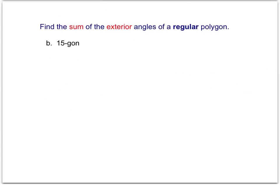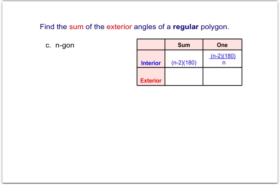So for any problem, no matter the number of sides of our polygon, if we're looking to find the total or the sum of the exterior angles, it's always going to be 360 degrees. We don't have to draw a 15-gon or calculate the interior sides to find the exterior sides. Our next problem asks us for the N-gon — that's asking us for the formula for any polygon, regardless of the number of sides. And we know that no matter how many sides, the exterior angles of any polygon will always equal 360 degrees.